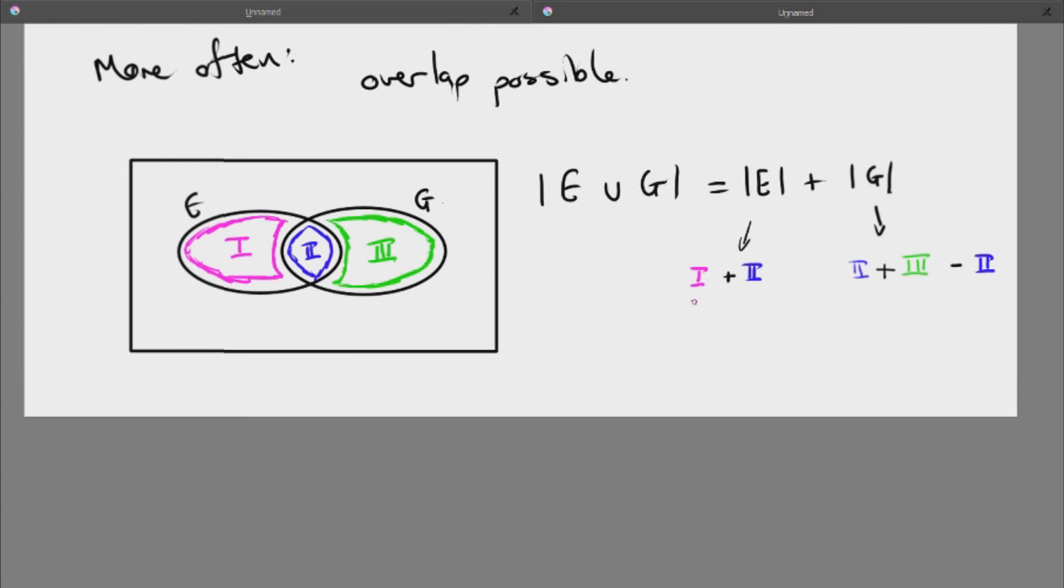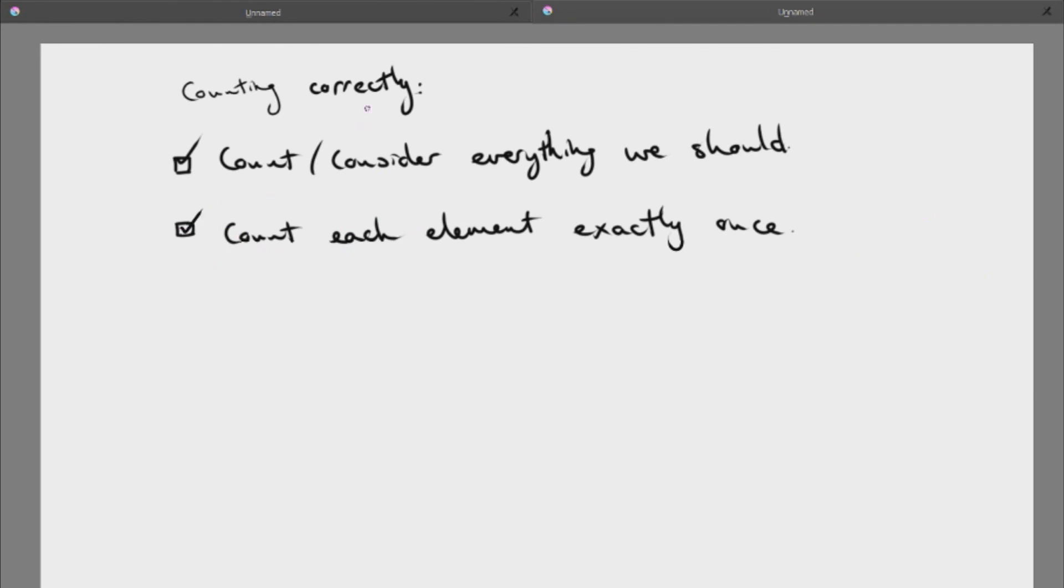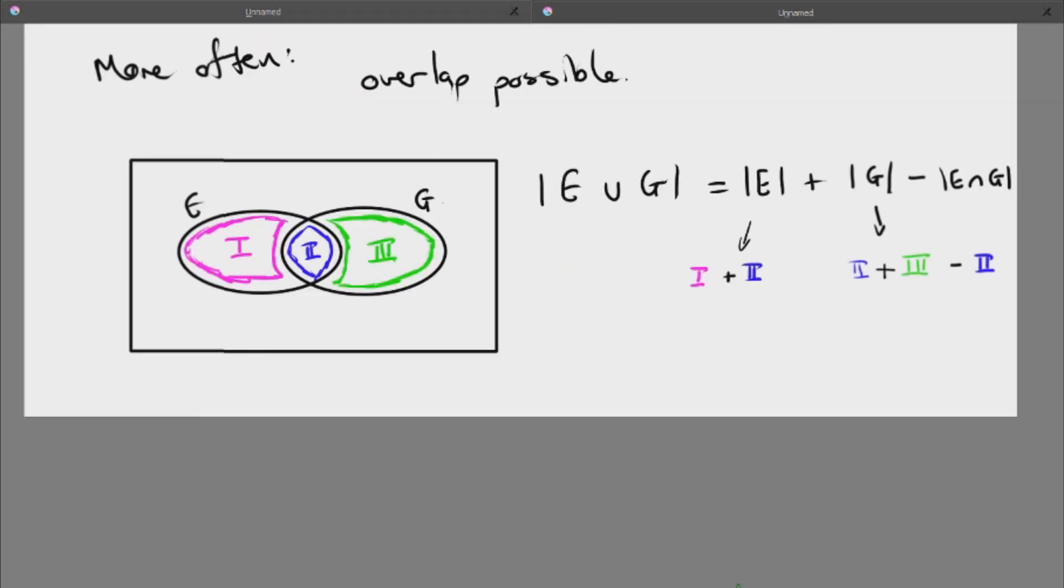I need to take away region two. Then I have pink region once, blue region once, green region once. Now, in terms of E and G, what is the name or the representation for that blue region? It's the intersection. Now I have counted each element exactly once, and I know my answer is correct. It's because of that overlap that if I just look at each circle separately and add those numbers together, I've counted things more than once.